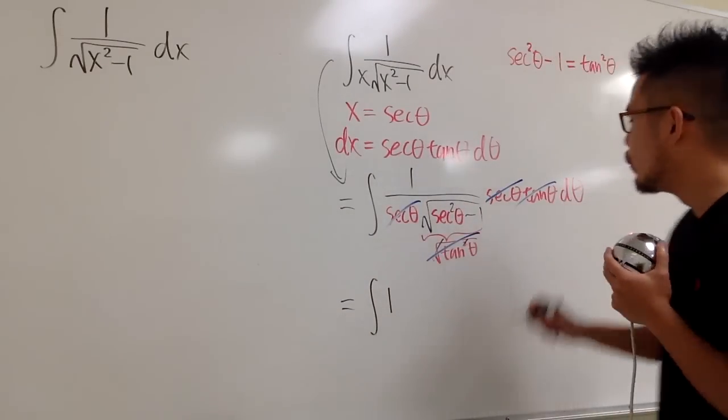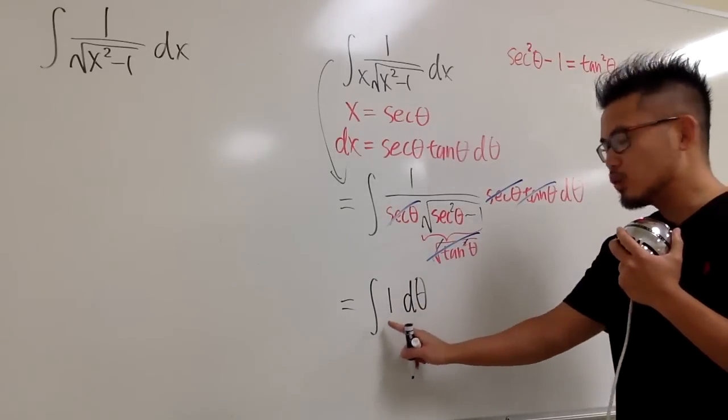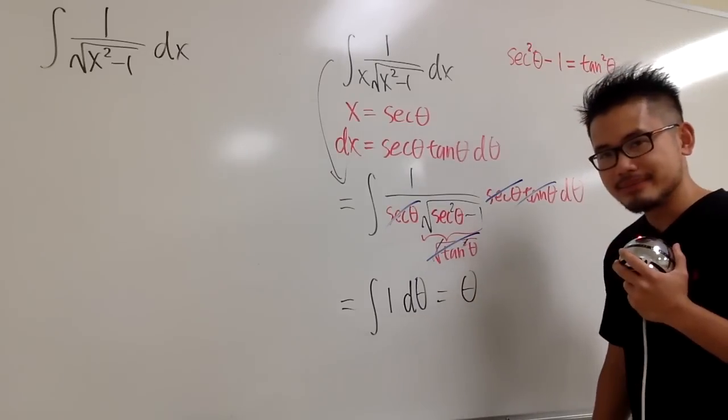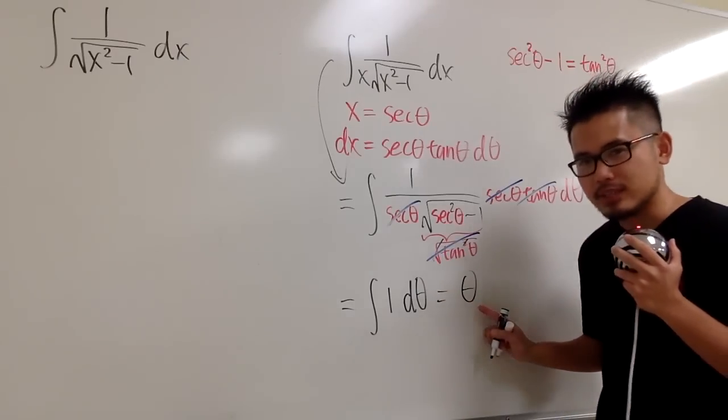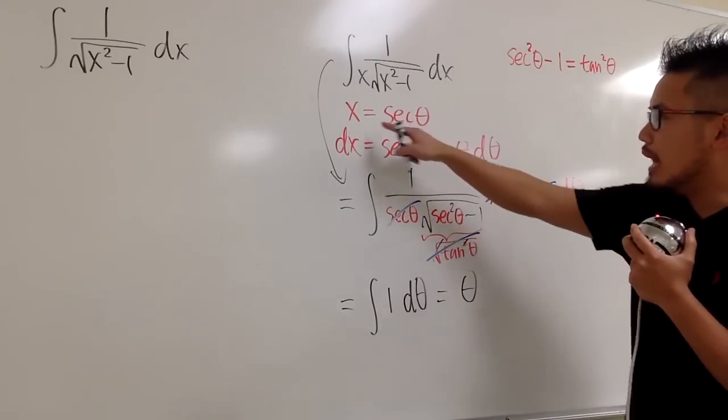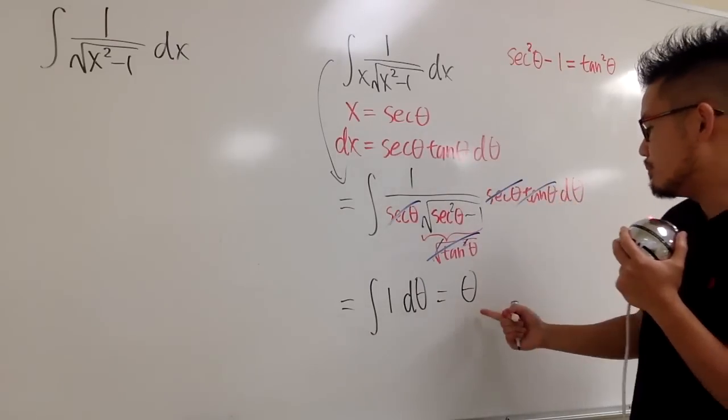And this is extremely nice because we are just integrating 1. But then you have to be careful. We are in the theta world. And what's the integral of 1 in theta world? This is just going to be theta. We are not done yet because we have to take this back to the x world. So let's refer back to what we have right here. We know x is equal to secant theta. Now, this means,